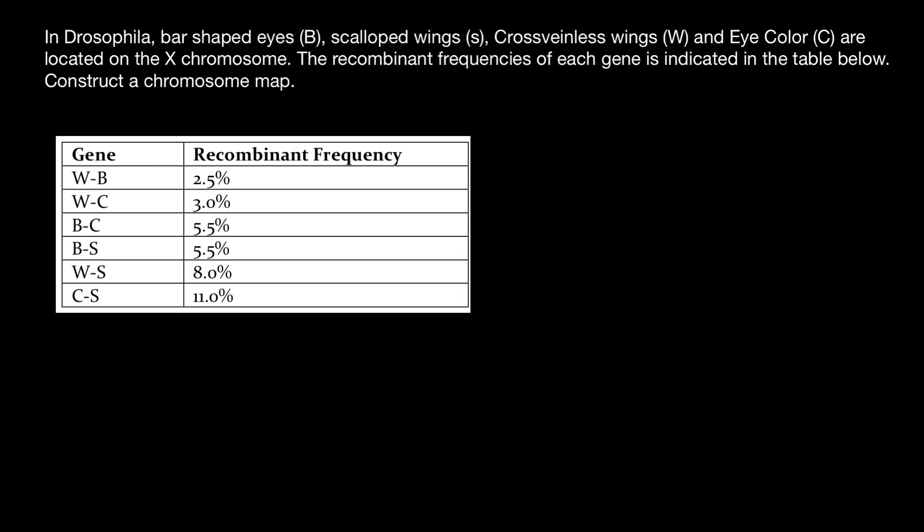So let me first give you some theory. Imagine that we have two chromosomes, two homologous chromosomes, which organism inherited from two parents. And during meiosis, each chromosome would make a copy of itself. So we call these chromosomes, which copy of itself, sister chromatids.